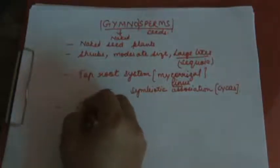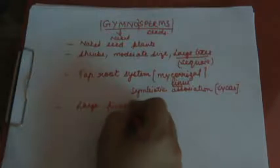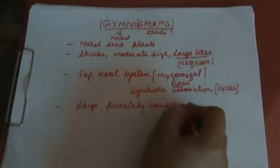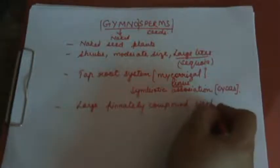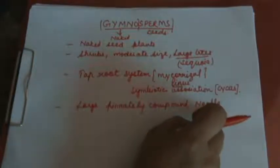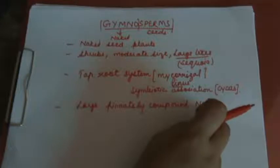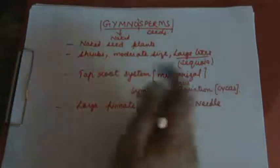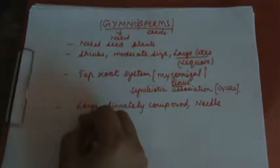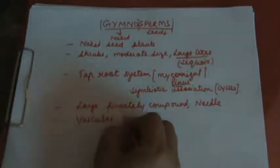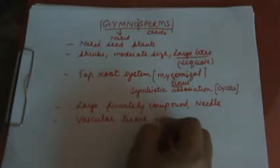The leaves of gymnosperms are large and pinnately compound, or needle-shaped. They are needle-shaped because they have to withstand extreme conditions of temperature, humidity, and wind. The vascular tissues — xylem and phloem — are well developed.